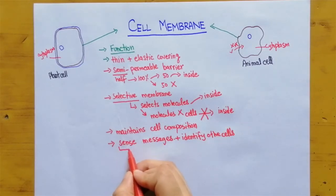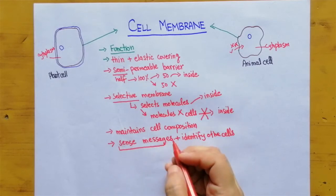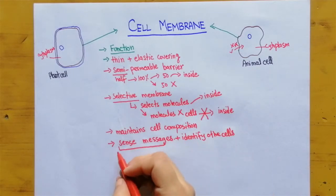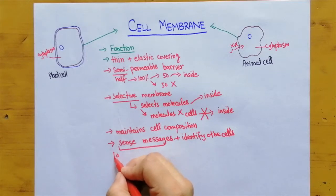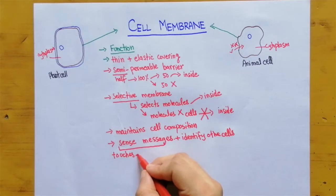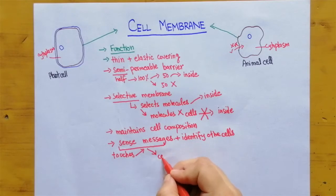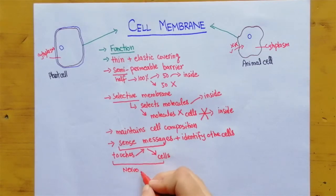So what does it mean, sense messages? For example in the nerve tissues when somebody touches you, the cell membrane it senses this message and sends this message to other cells. This specific function is actually happening in nervous or nerve cells.